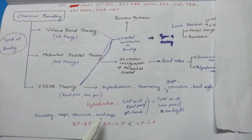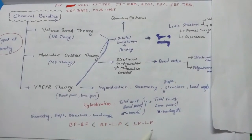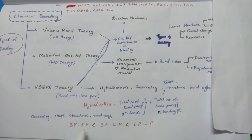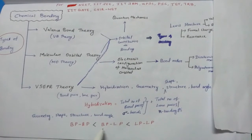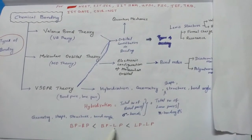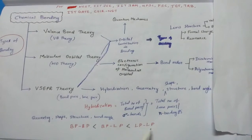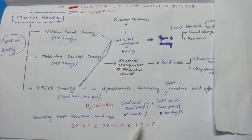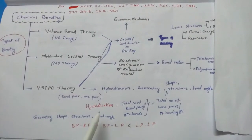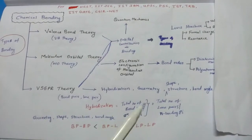For predicting the geometry, shape, and structure, VSEPR theory gives us bond pair–bond pair repulsion and bond pair–lone pair and lone pair–lone pair repulsion. Bond pair–bond pair repulsion is lower than bond pair–lone pair repulsion, which is lower than lone pair–lone pair repulsion. Lone pair–lone pair repulsion is the highest, and this lone pair decides the shape of the given molecule.